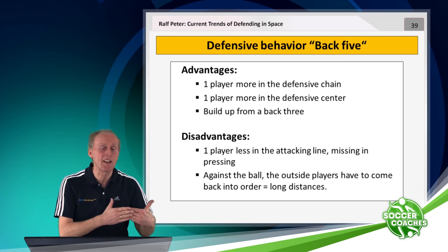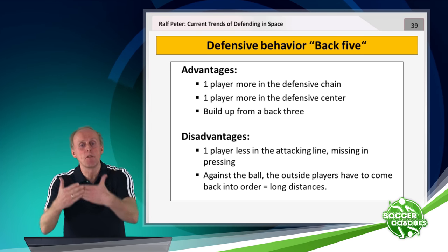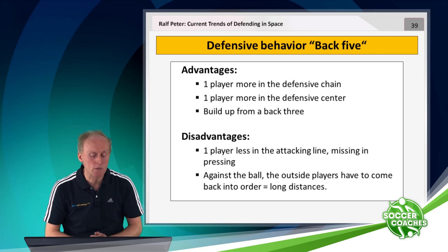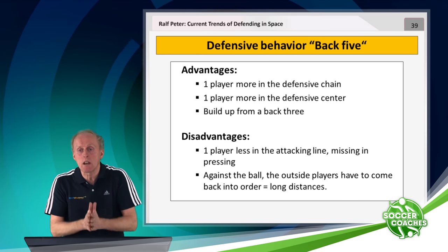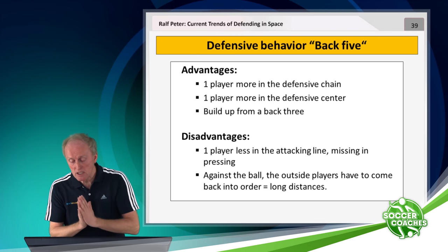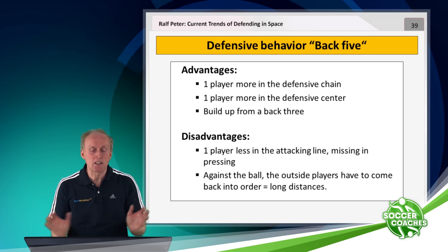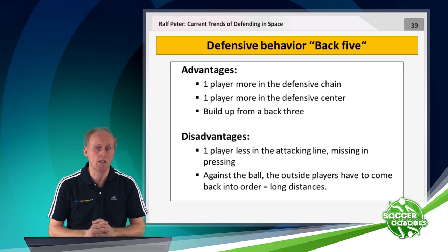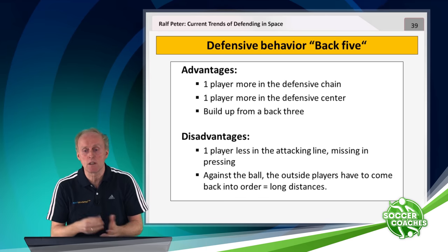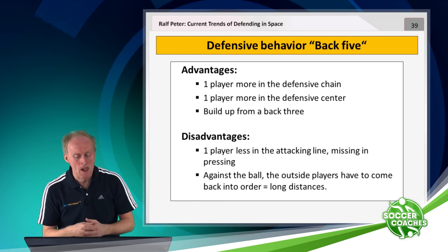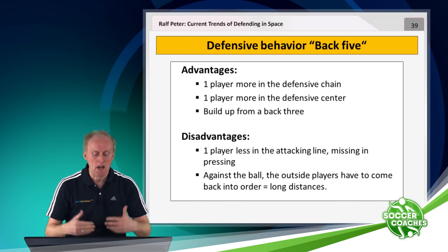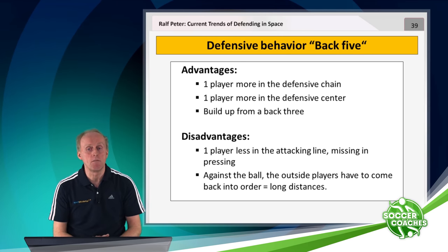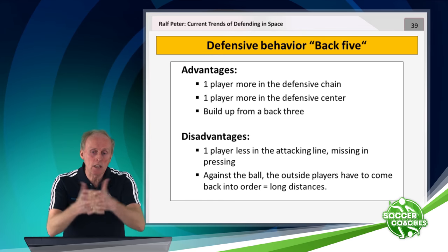Disadvantages — you can see it. If I have one more in the back, I miss one in front. If I want to defend aggressively, if I want to play high pressing, I have one player less and I really miss that. That's why I think if you play with a back five, you probably automatically play a bit deeper. There are certainly exceptions — it always depends on the quality of the players and the quality of the opponent — but in most cases, this player is missing in front of the ball in order to play pressing in the opponent's half very high.